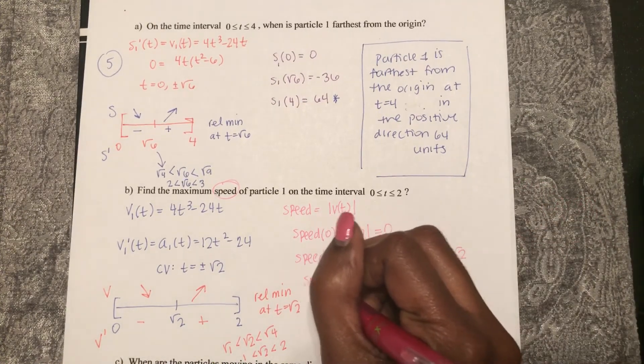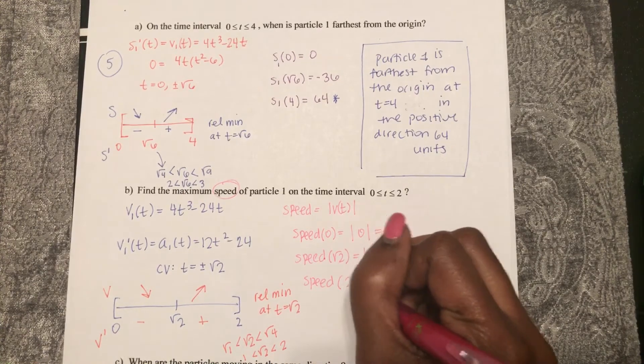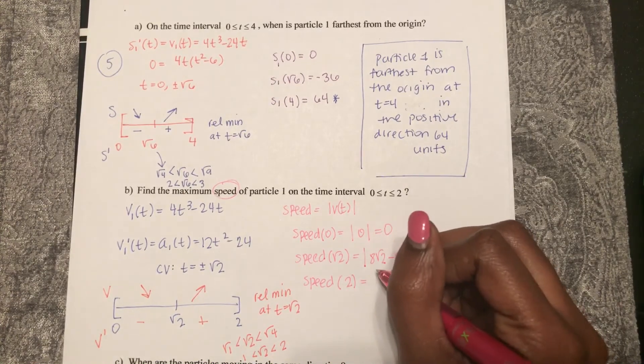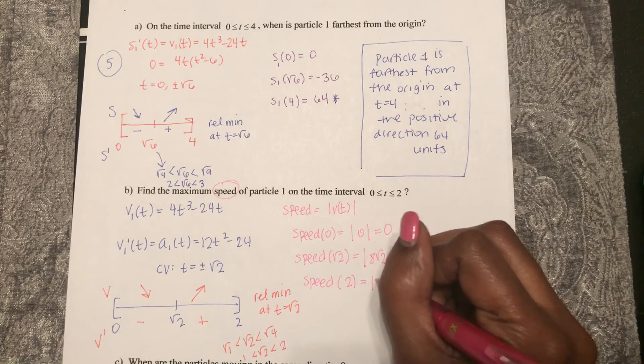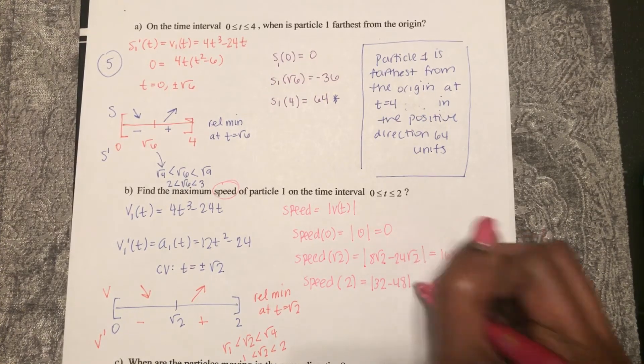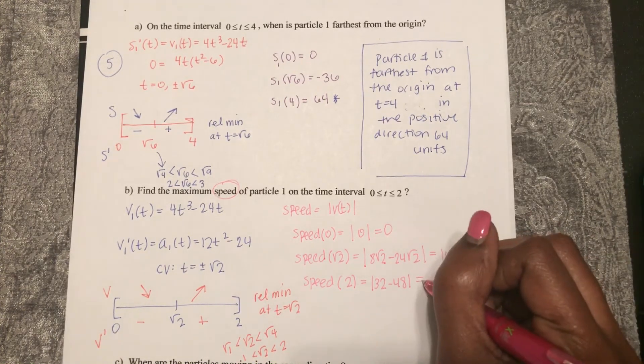And then if I want to check my speed at time equals two, that's the absolute value of 32 minus 48, which is 16.